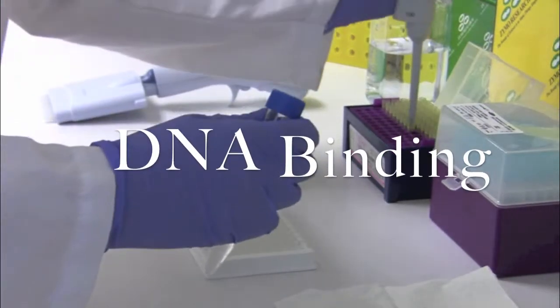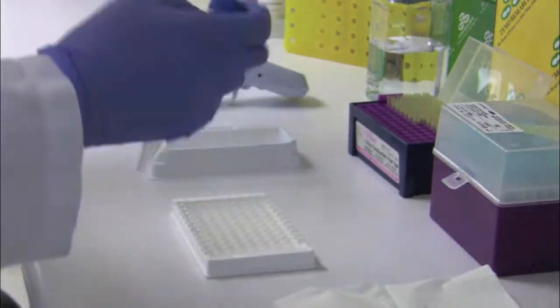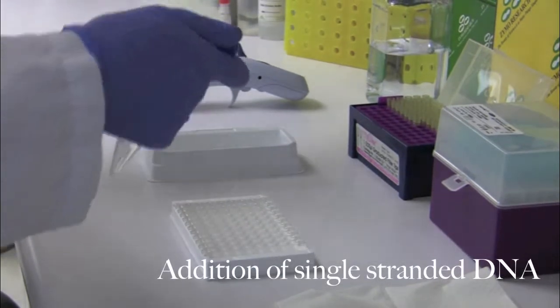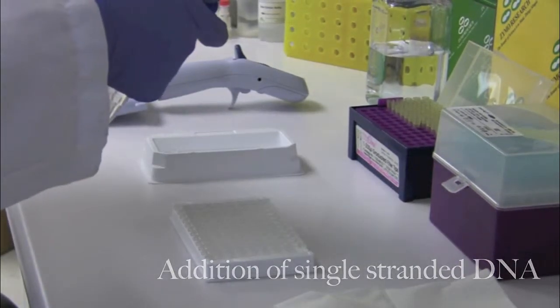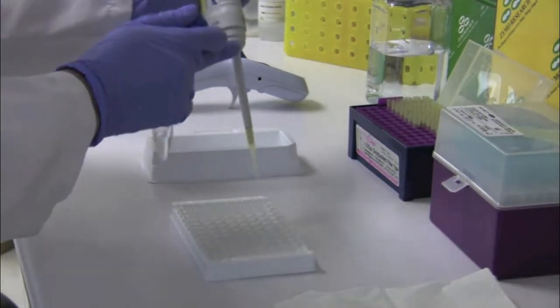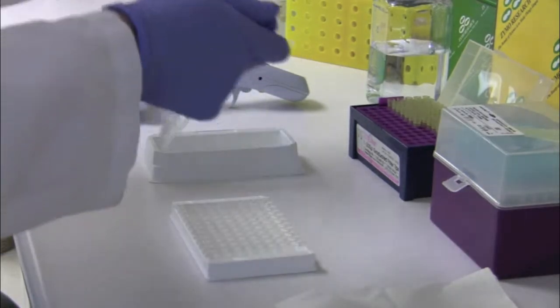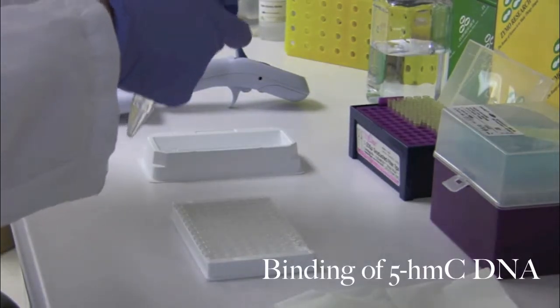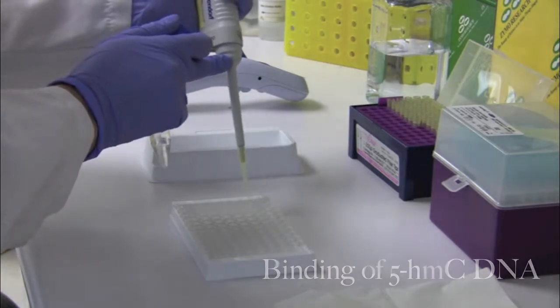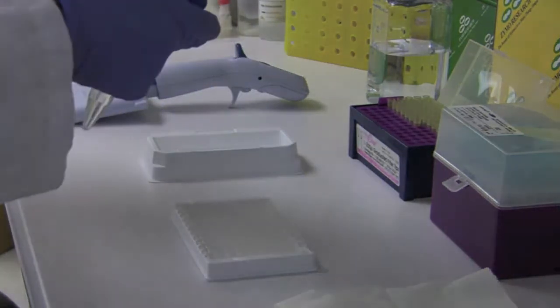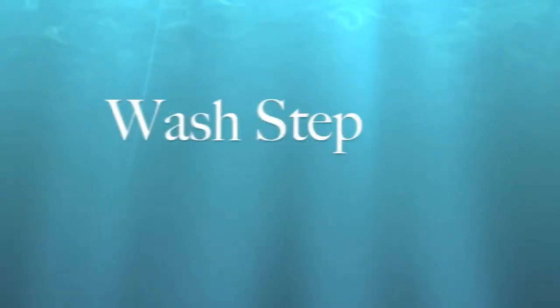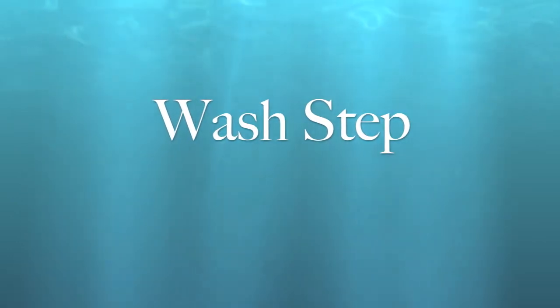The blocking buffer is then discarded and single-stranded DNA controls and samples are incubated in the wells for one hour at 37 degrees Celsius. DNA that contains 5-HMC will bind to the anti-5-HMC polyclonal antibody coated to the wells. Any DNA that does not contain 5-HMC will be washed away during a repeated wash step.